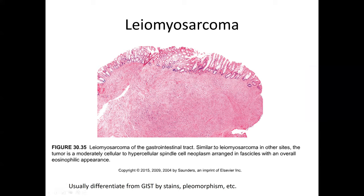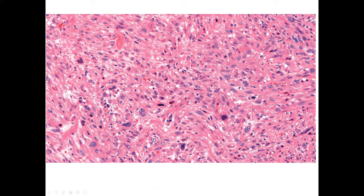Leiomyosarcoma is rather rare in the GI tract, but it can occur. We have a lot of smooth muscle there and there are enough exposures that it does happen. It looks like a stromal neoplasm in the wall, doesn't seem to displace or invade the mucosal surface unless secondarily ulcerated, and the cytology is usually more high-grade than most GIST tumors — although some epithelioid GIST tumors can be fairly high-grade. Immunohistochemistry for smooth muscle markers including desmin and myogenin would be helpful in this differential.